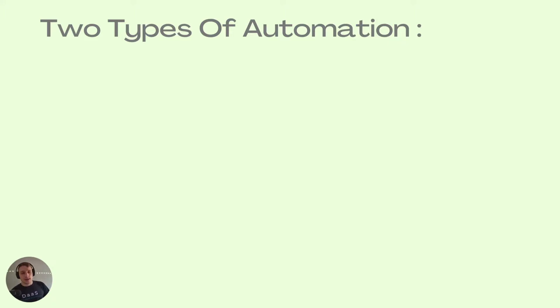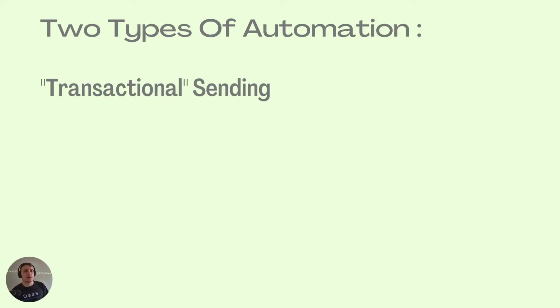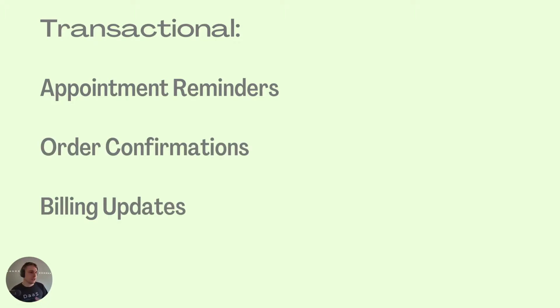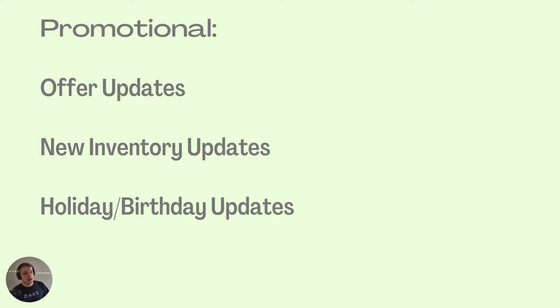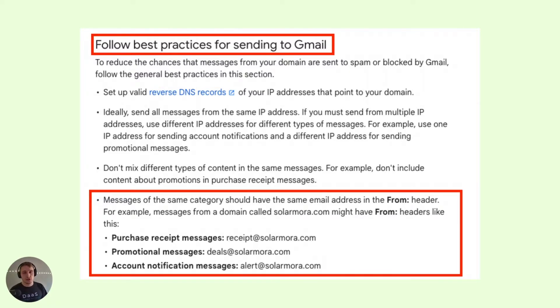Before we get into this, I want to make sure you know there are actually two types of automation: transactional sending and promotional sending. Transactional sending covers things like appointment reminders, order confirmations, and billing updates. Promotional things are offer updates, new inventory updates, and holiday or birthday offers. Google's best practices for sending with Gmail state that messages of the same category should have the same email address in the From header — for example, a domain called Solarama might use From headers like receipts, deals, and alerts.